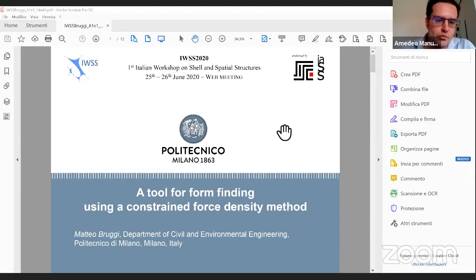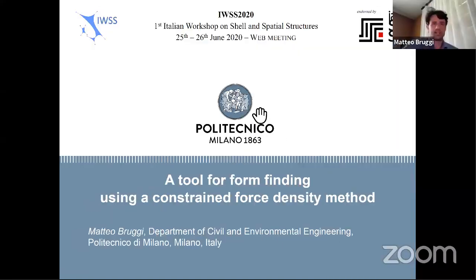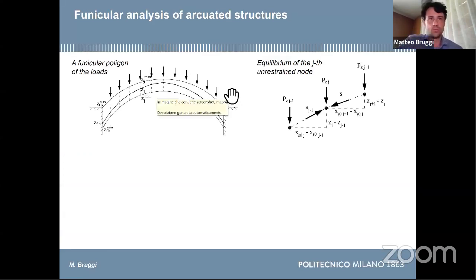I hope you can hear me and see my screen. It's the force density method in its original version, but combined with mathematical programming this time. I would like to start with a well-known problem of determining funicular polygons for arches subject to self-weight, and the way to attack the problem is looking at the equilibrium. A very important point is the linearization of the equilibrium equation with respect to the vertical coordinates.